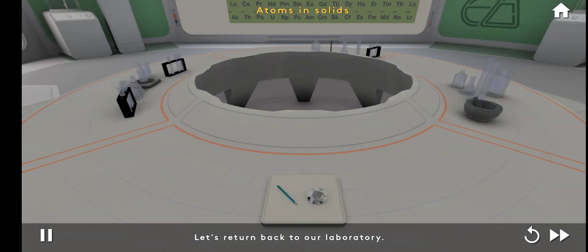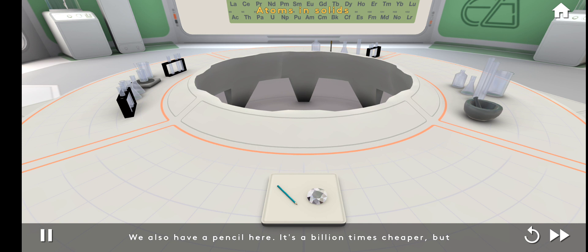Let's return back to our laboratory. We also have a pencil here. It's a billion times cheaper, but interestingly, its lead is made of the same carbon atoms as a diamond. Let's look inside.